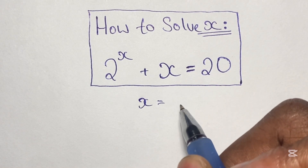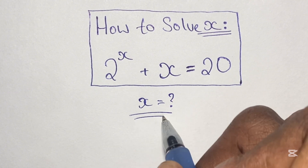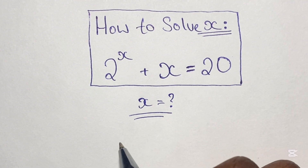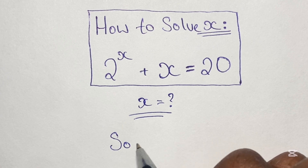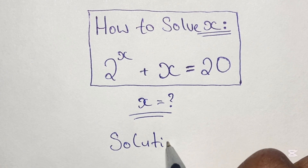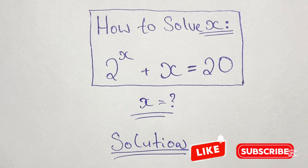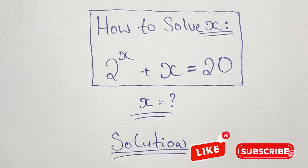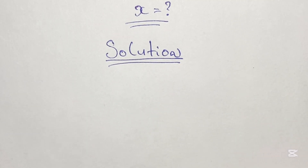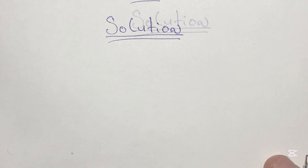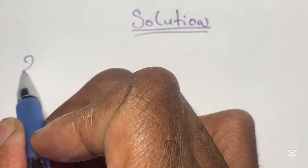While many may have guessed that the answer is 4, not many can show that x is indeed equal to 4. Now if you want to learn how to solve this equation please stay with me to the end of this video. And if you would like to see more of these kinds of videos you can subscribe to my channel for my latest updates. You can also check out my math olympiad playlist to see how to solve other algebraic exponential equations.